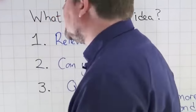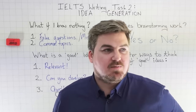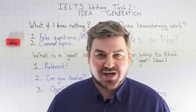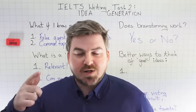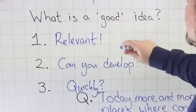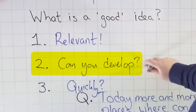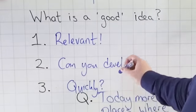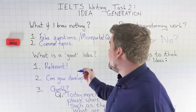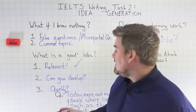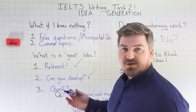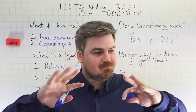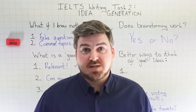The third thing is: can you think of that idea quickly? If I give you six hours to think of an idea, anybody can do that. But you need to think of ideas quickly. What you're trying to do is think of relevant ideas that you can develop and that you can think of quickly. Those are the three things. If the idea is not relevant, it's not a good idea. If you can't develop it, it's not a good idea. If you can't think of it quickly, it's not a good idea. All three of those things must be present in any technique you use to help you generate ideas.